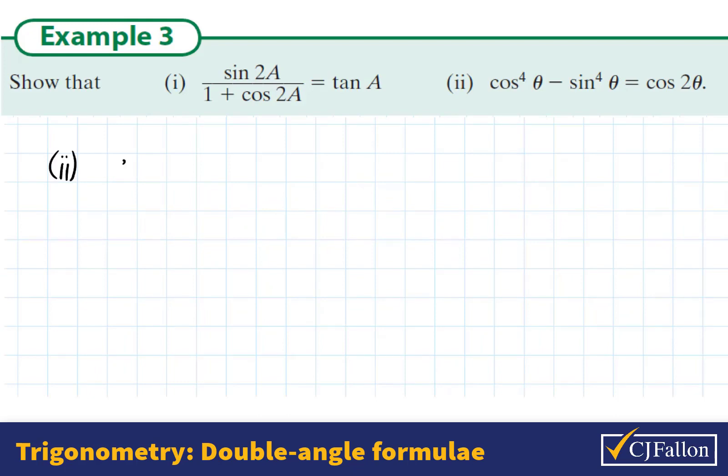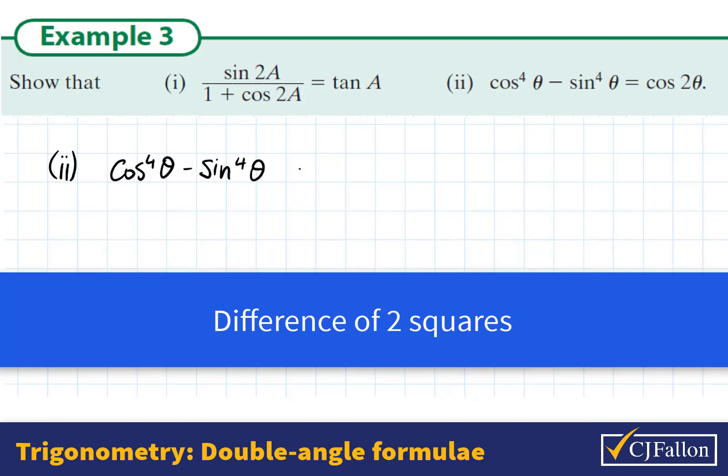In the second question we want to show that the left hand side equals the right hand side. So we have cos to the power 4 theta minus sine to the power 4 theta. If you notice that this is a difference of two squares it might be useful. So I could write this as cos squared theta squared minus sine squared theta squared, the difference of two squares.